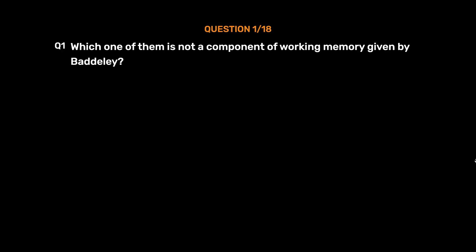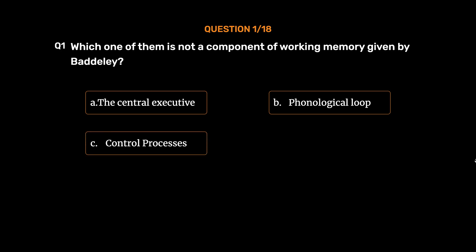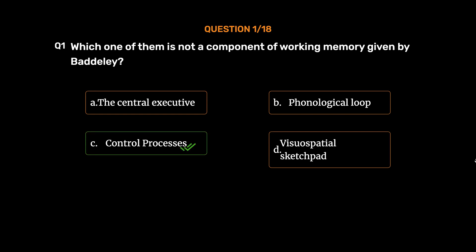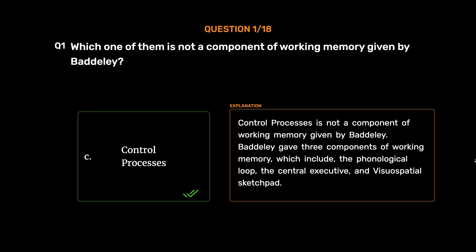Question number 1. Which one of them is not a component of working memory given by Baddeley? Option A: The Central Executive. Option B: Phonological Loop. Option C: Control Processes. Option D: Visual Spatial Sketchpad. The correct answer is Option C, Control Processes. Control Processes is not a component of working memory given by Baddeley.